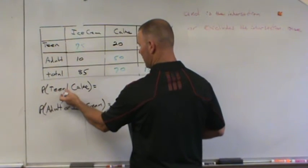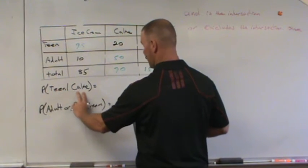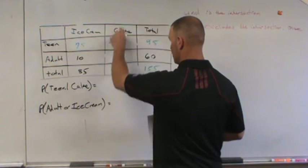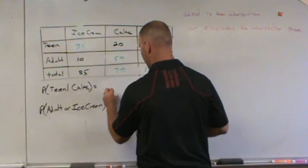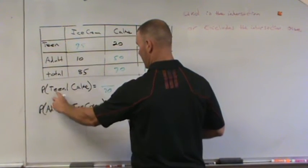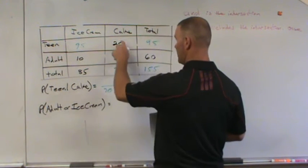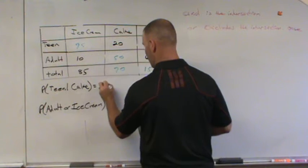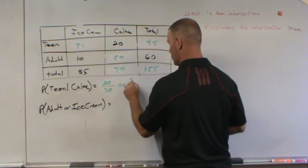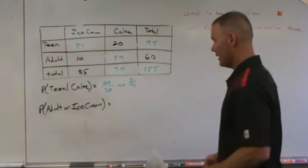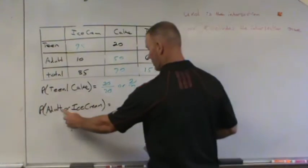Given probability right here, cake is my total population. So 70 divided by, or actually below that, it's teen given cake. Well, teens given cake is 20 and we reduce this to 2 over 7. The last one, this is the main one I wanted to talk to you about, since we have an or.